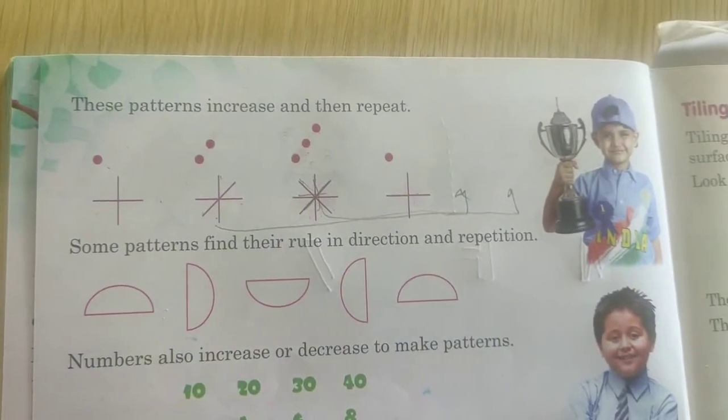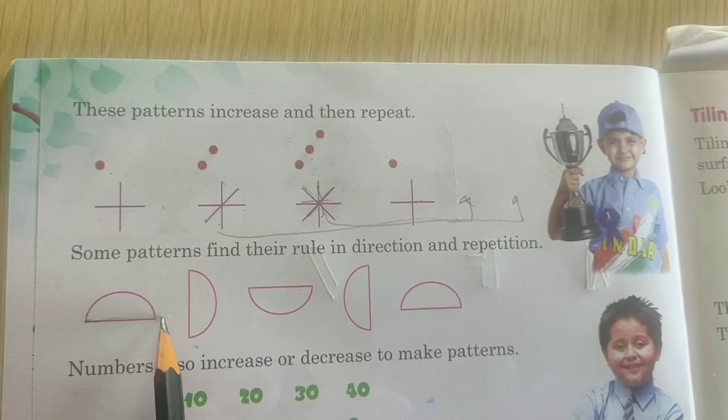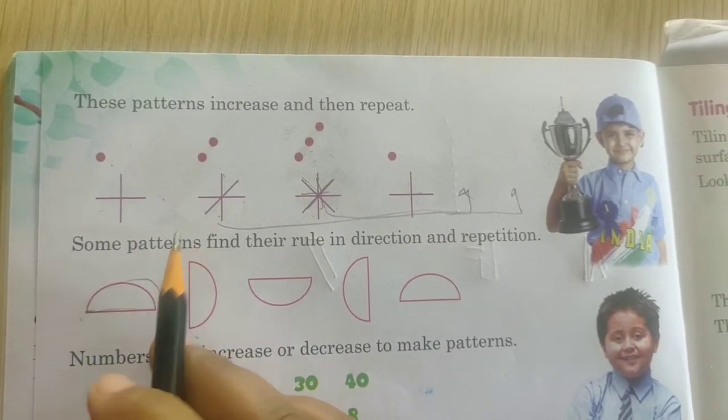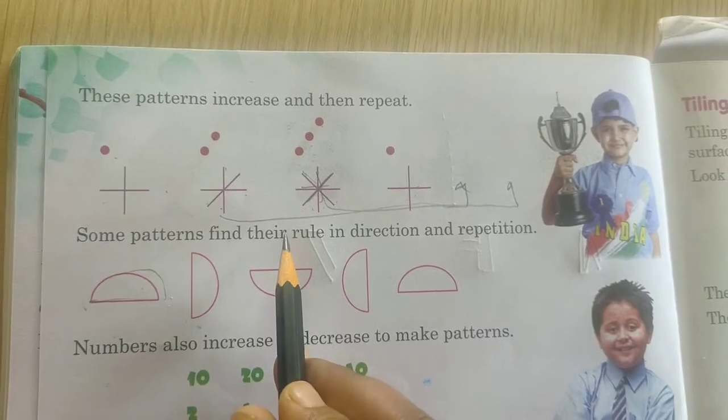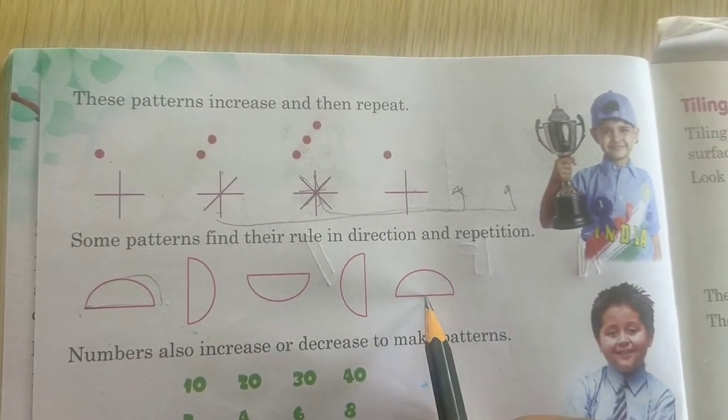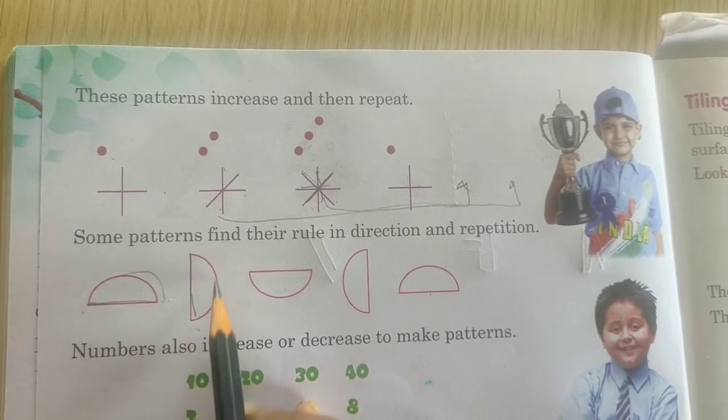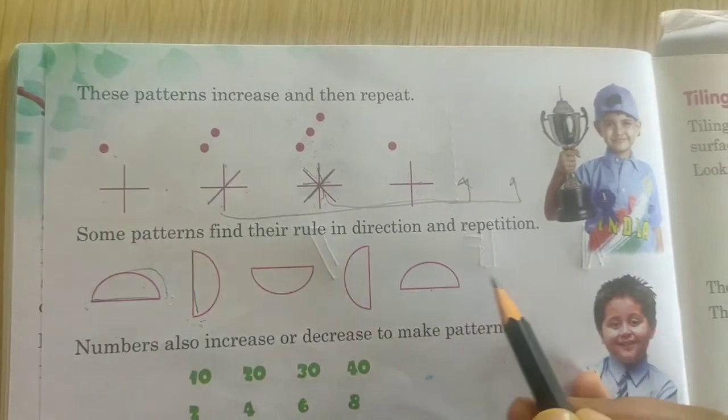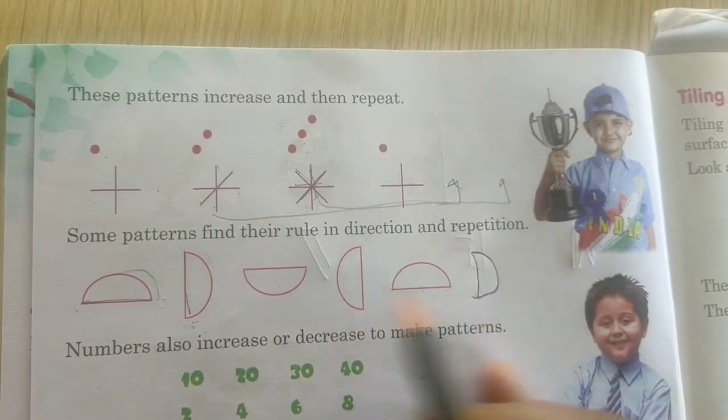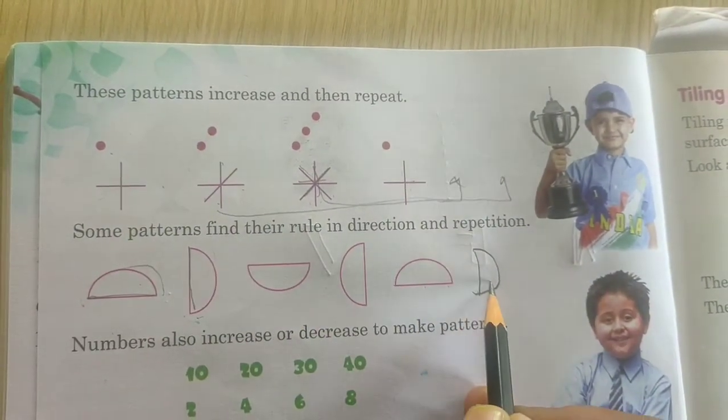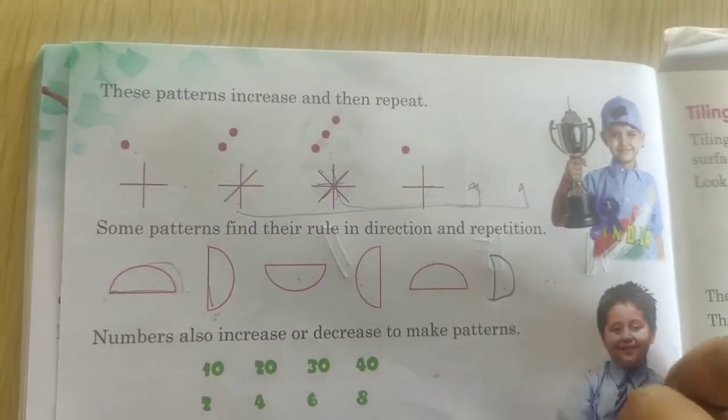Some patterns find their rules in direction and repetition. See now this is in this direction. This only, what it became? This direction. Now up and here, again down. The base is down. Now this like this. Now after this how it will come? Like this. Same it will repeat. After this, this will come. So it is repeating pattern.